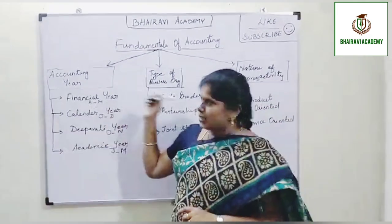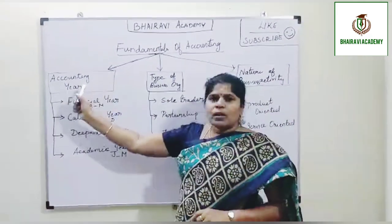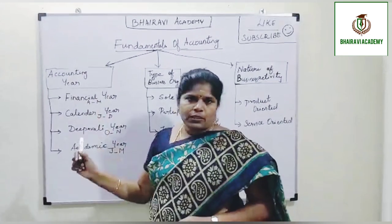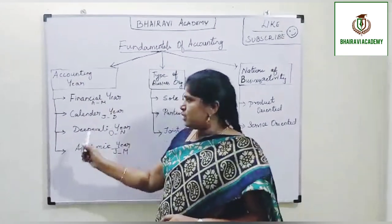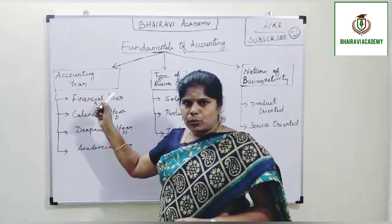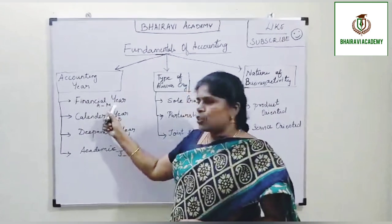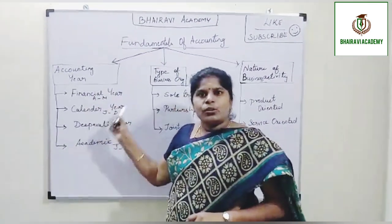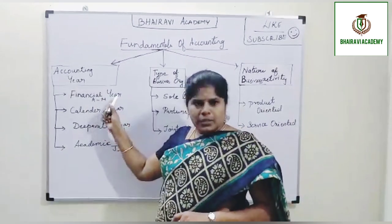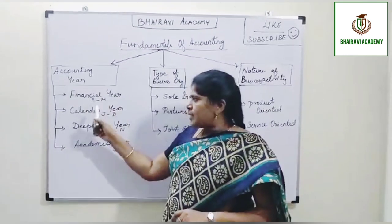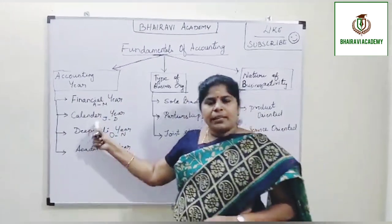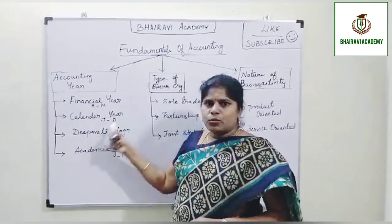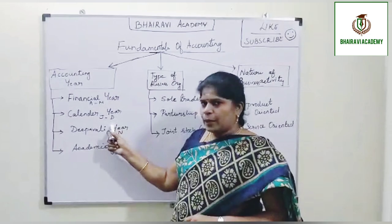Let us go one by one in detail. Accounting year is further classified into four types. The first type is the financial year, which starts from 1st April and ends on 31st March of the subsequent year. The second type is the calendar year, which starts from 1st January and ends on 31st December of the same year.